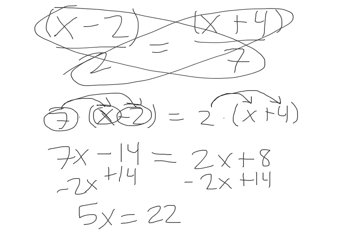It would be the same thing. You do 5x equals 22 divided by 5 divided by 5. This gets you x equals 22 divided by 5.